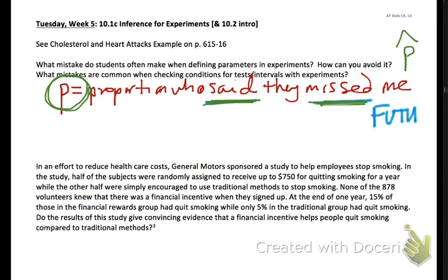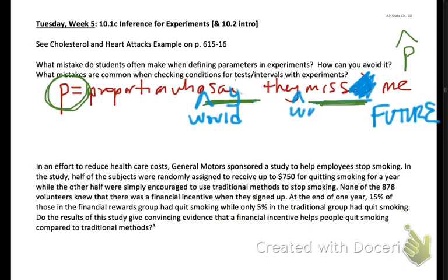Use future tense — or subjunctive. So instead you would say 'the proportion who would say they miss me.' Present tense is okay too, or 'that they would miss me' to make it sound more future tense. That would be our parameter. Make sure you use future tense.